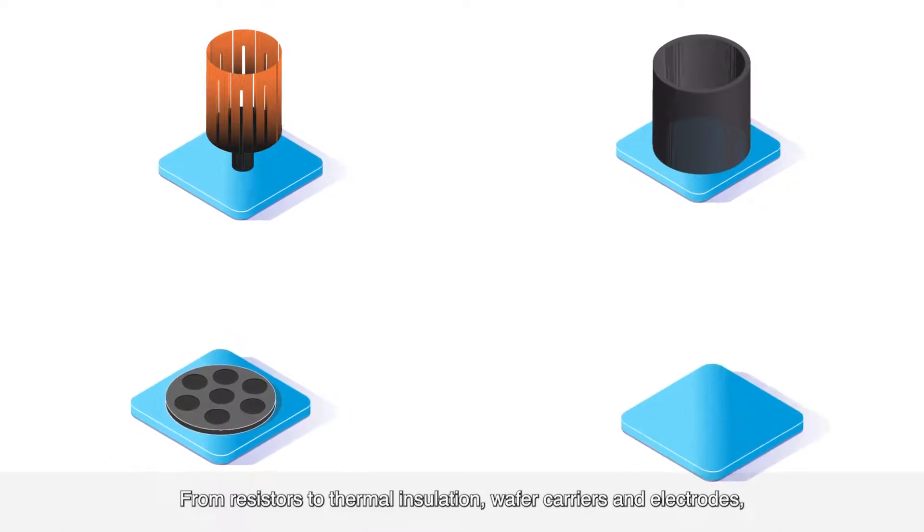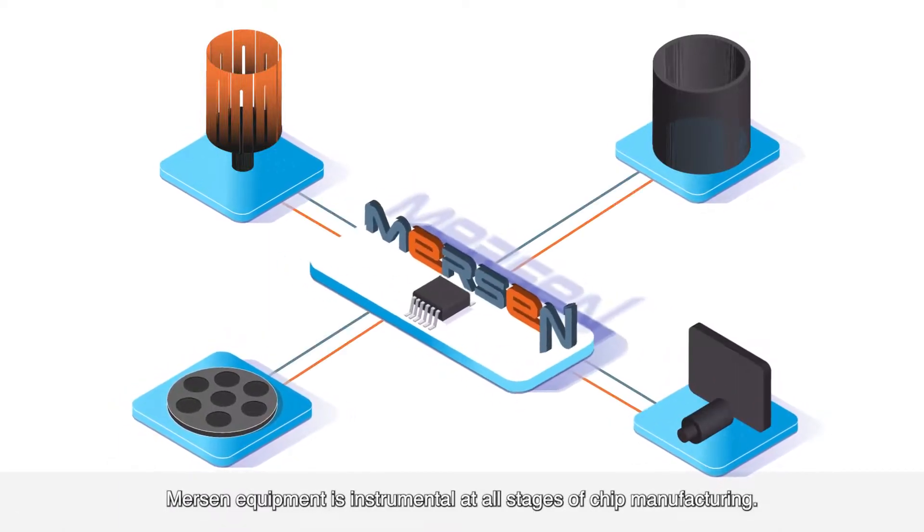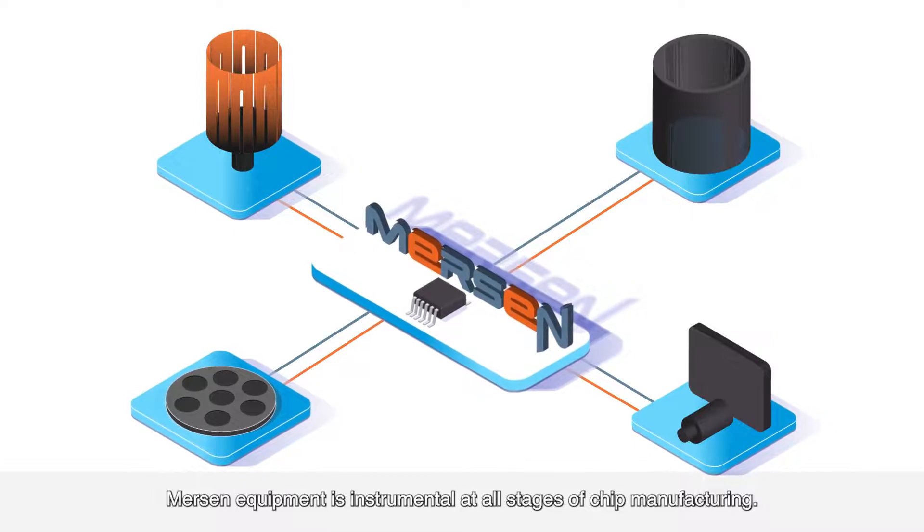From resistors to thermal insulation, wafer carriers and electrodes, Mersin equipment is instrumental at all stages of chip manufacturing.